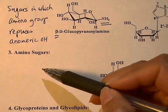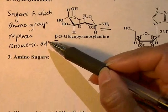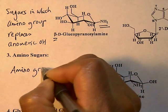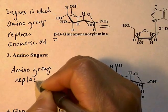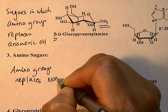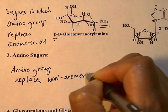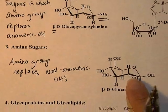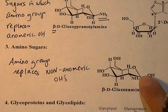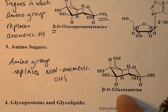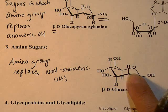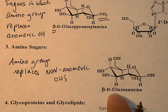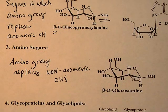Now I want you to distinguish the difference between an amino sugar and a glycosyl amine. In an amino sugar, the amino group replaces non-anomeric OHs. So if you see an amino group anywhere in the sugar except at C1 — for example, at C2 — that belongs to a class called amino sugars. Beta-D-glucosamine is the structure of this.